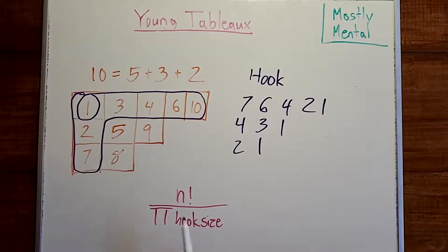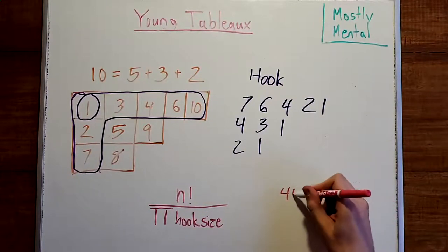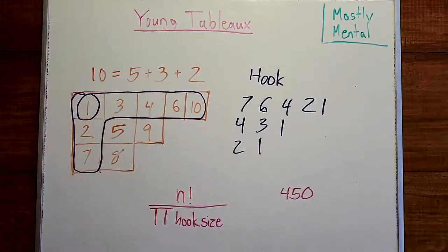And plugging in n equals 10 and the hook sizes we computed earlier, we end up with 450 possible tableaux for this shape.